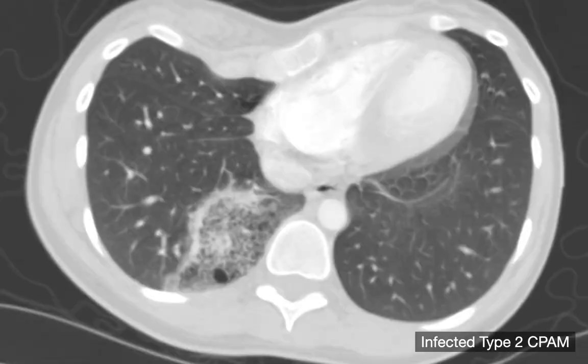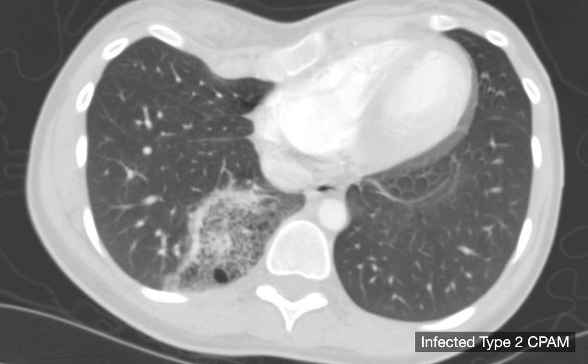Type 2 CPAMs have cysts in the half to two centimeter size range. When those become infected, they can have a pretty specific look — a bubbly kind of mass. Something like this has very few diagnostic options. Especially if seen in an upper lung, it's very unlikely to be a sequestration, so your diagnosis in terms of options would be extremely limited. This is why we consider these to be relatively specific masses.